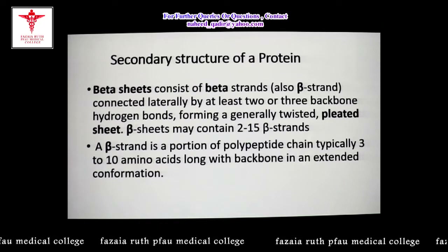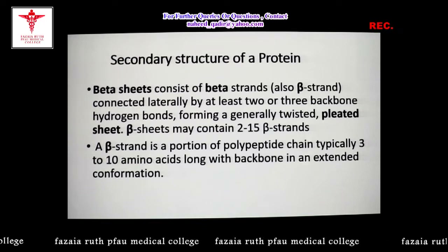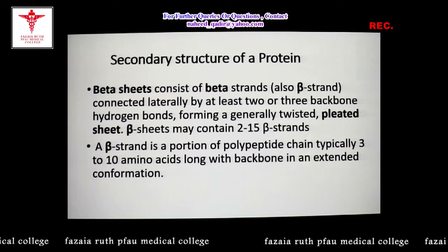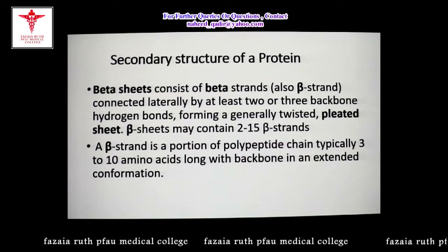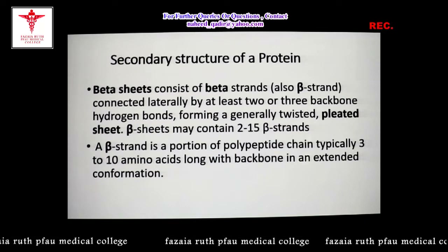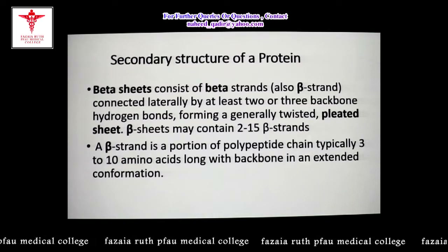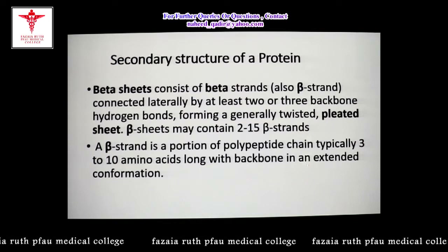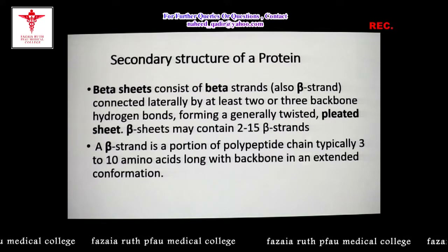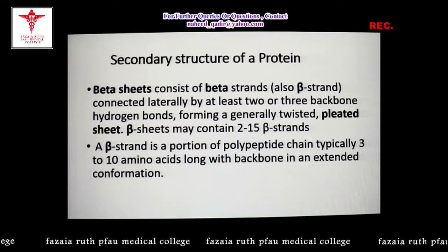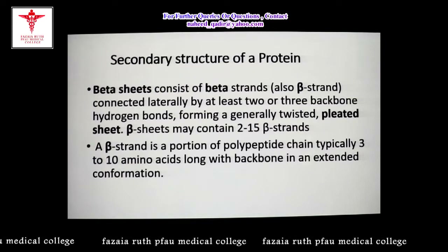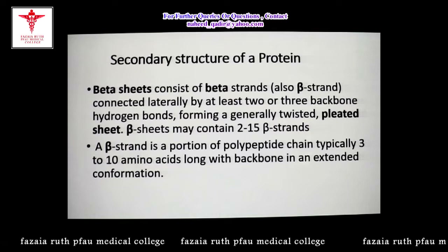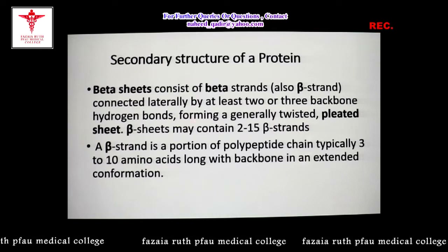The second example of the secondary structure of protein is the beta pleated sheet. A beta strand is simply a portion of a polypeptide chain — 3 to 10 amino acids long — in a fully extended conformation. When multiple strands combine, they form sheets. Sheets are multiple strands arranged one after another and laterally stabilized by hydrogen bonds. Beta sheets may contain 2 to 15 strands.